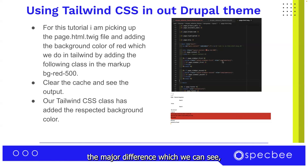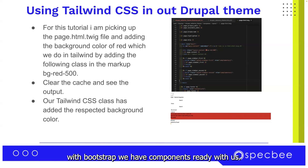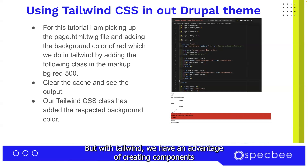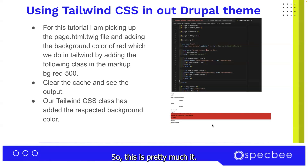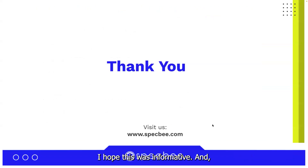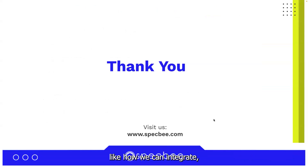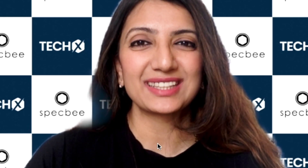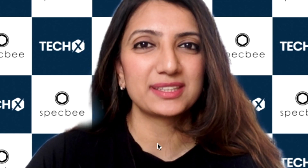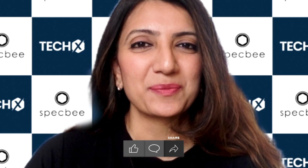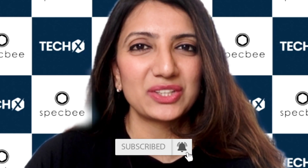The major difference between Bootstrap and Tailwind CSS is that with Bootstrap we have components ready for us, but with Tailwind we have the advantage of creating components from scratch using utility classes. This is pretty much it. I hope this was informative and easy to understand — how we can integrate Tailwind CSS in our Drupal projects. Thank you. Thanks for watching. I had an amazing time learning all the new things here at Specbee's TechX. Do let us know in the comments below, and keep following Specbee for the latest trends in technology. See you in the next one.